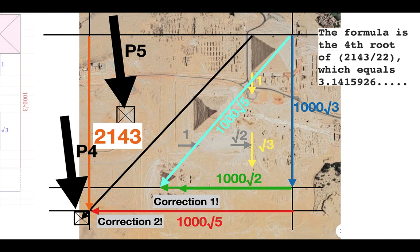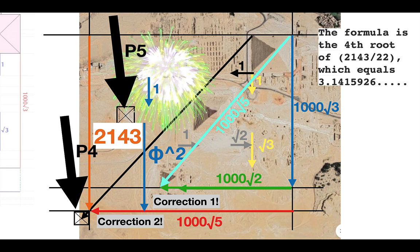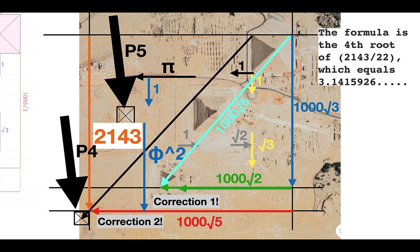From the eastern edge of Khufu over to P4 we've got a thousand root five — another very interesting connection. And then with P5, if you take the bottom of Khufu to the top of P5 as one, then by the same ratio from the bottom of P5 down to P4 is phi squared. And going from Khufu to the west, if you take that as one and then take the edge of Khufu over to the eastern edge of P5, you have pi. These sacred connections seem to vindicate P4 and P5 as real points — pyramids that were intended or that fit the geometry.